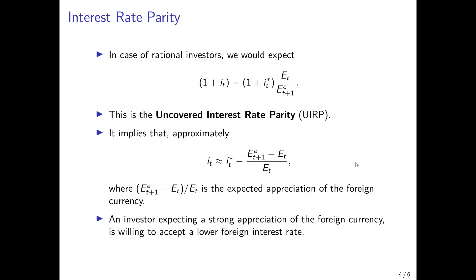This is the uncovered interest rate parity. It implies that the interest rate in the home country is approximately equal to the interest rate in the foreign country minus the expected appreciation of the foreign currency. This means that if an investor expects a strong appreciation of the foreign currency, the investor would be willing to accept a lower foreign interest rate — at home the investor enjoys a higher interest rate, abroad a lower interest rate, but gains through the expected appreciation of the foreign currency. It is called uncovered because it involves the expectation of the exchange rate one year from now.